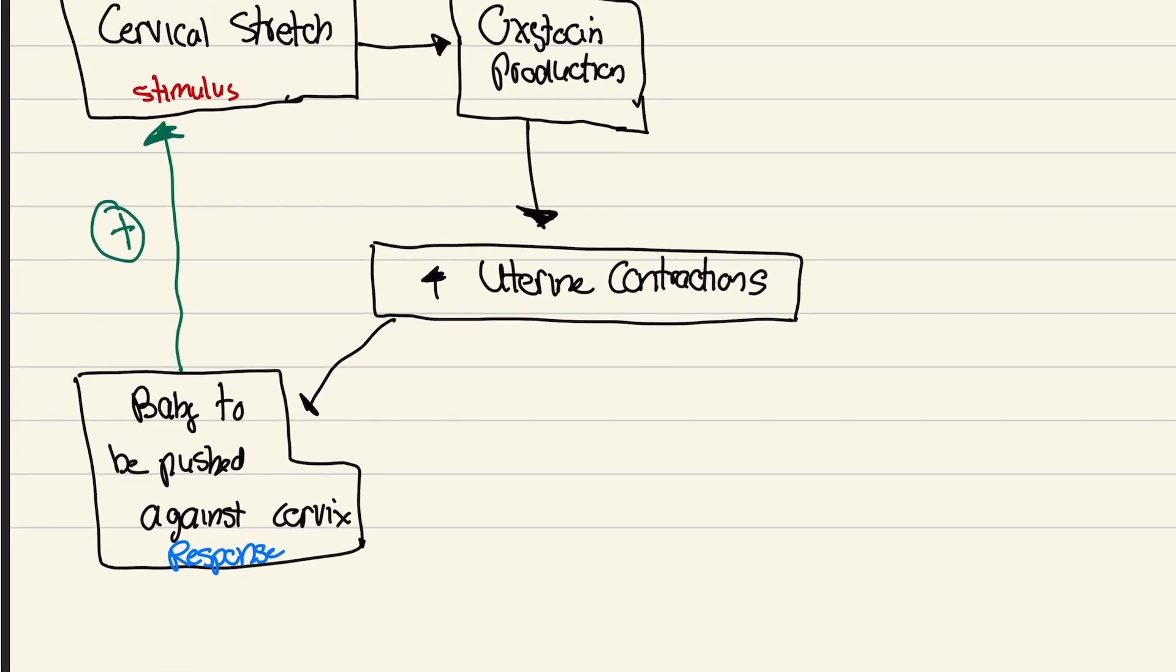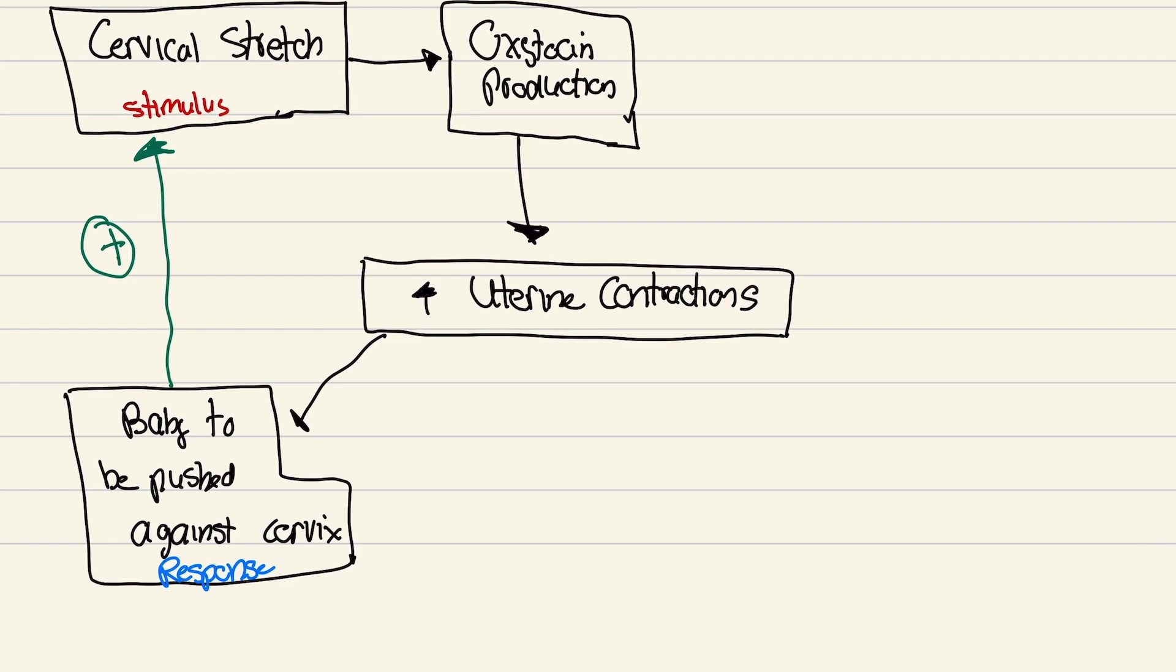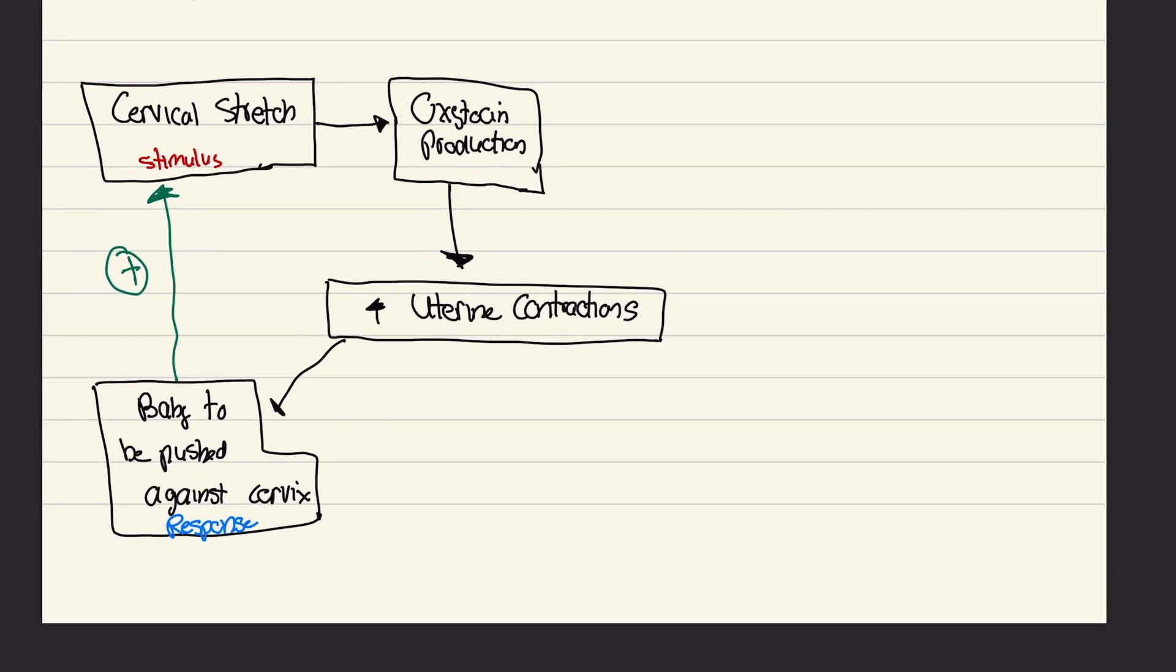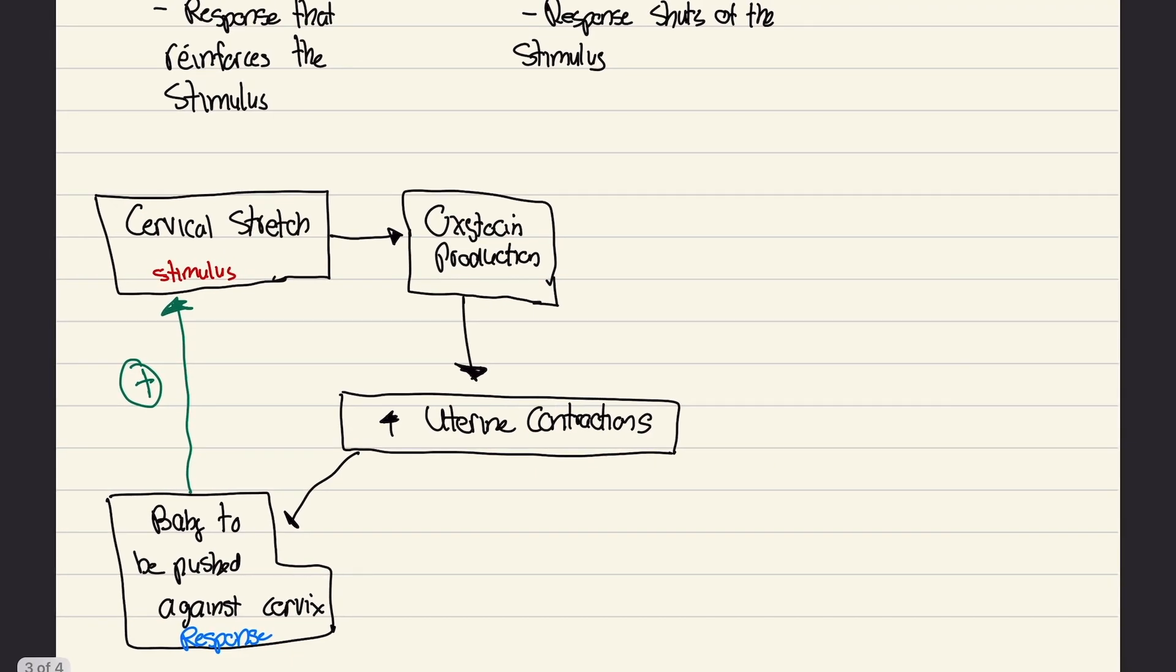And it stops by some kind of external factor, AKA baby delivered. Once the baby's out of there, there's still contractions a little after, but oxytocin doesn't stop getting produced because we've got less cervical stretch. So that's the gist of positive feedback loops.